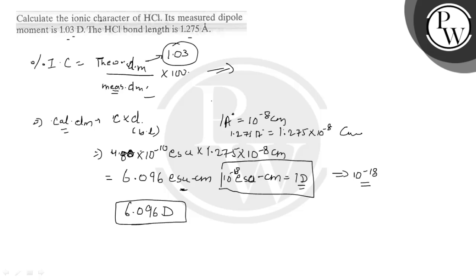Now we can calculate 1.03 divided by 6.096, and that will come to 16.8 percent.